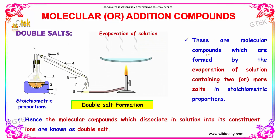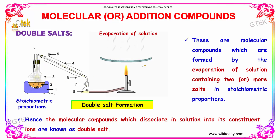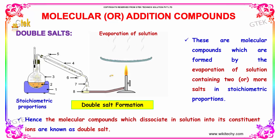These are all molecular compounds which are formed by the evaporation of solution containing two or more salts in stoichiometric proportions. Are you able to see the evaporation of solution here? The molecular compounds which are dissociated in solution into their constituent ions are called double salts.